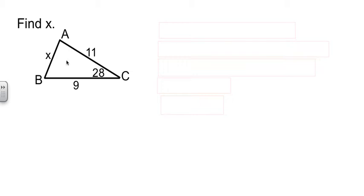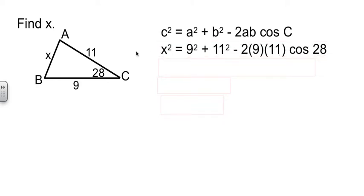Since I have the side across from the angle, that's what I need to work from first. C is the angle, so little c is the side. Now I'm going to plug in what I know. I know this side is x. These two sides are 9 and 11. Minus 2 times A is 9 times B is 11, times cosine of 28.